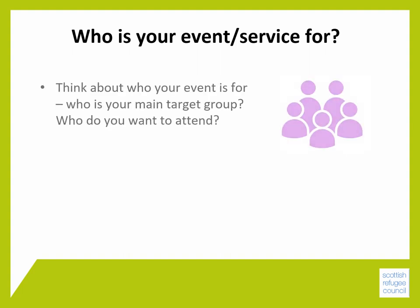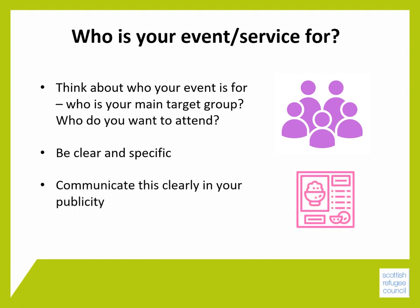Think about who your event is for. Who's your main target group? Who do you want to attend? Be clear and specific — for example, Eritrean refugees and asylum seekers living in Glasgow, or asylum-seeking men living in the northwest of Glasgow, or all migrant communities in Scotland. Communicate this clearly in your publicity, including what your publicity says and how you get it to the people you want to see it. Think about the places people go where you can advertise your service or activity.